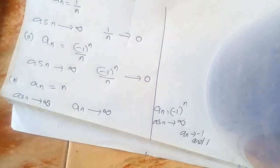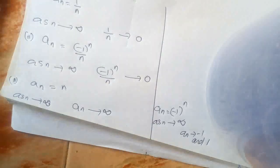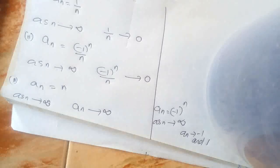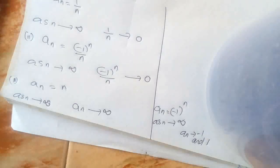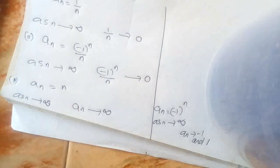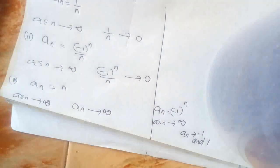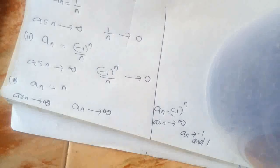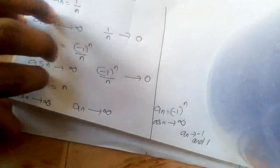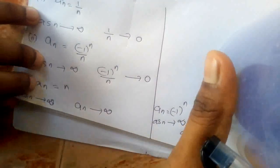Roughly speaking, we can say a sequence converges when, as n becomes large, the terms of the sequence are arbitrarily close to some value — that value is called the limit point of that sequence. This is not the mathematical definition; this is the rough idea of the limit of a sequence. Next, I will give the mathematical definition of the limit of a sequence.